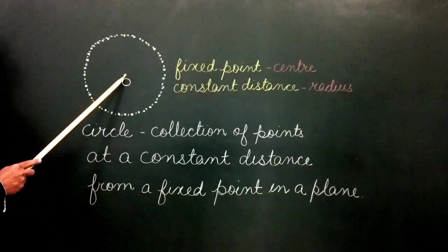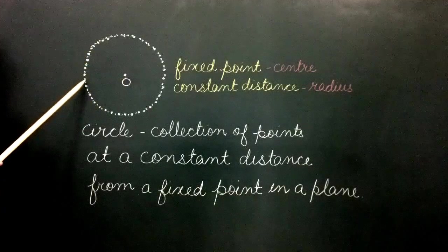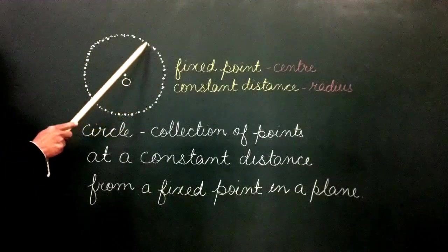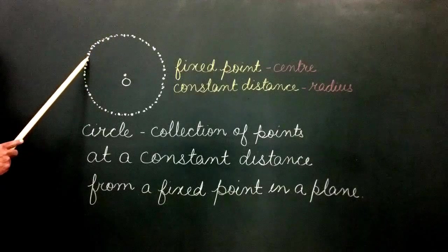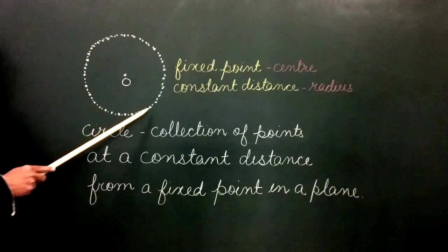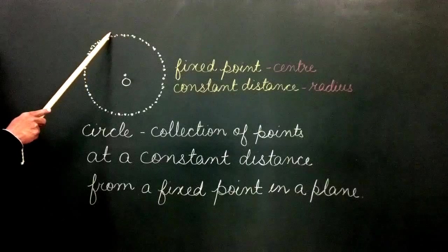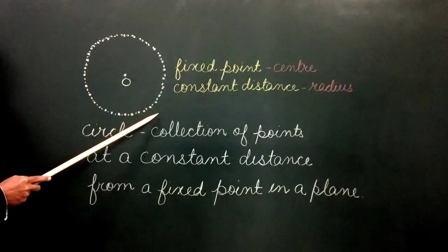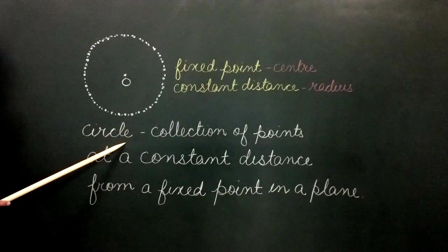Here we have a point O. All these points have been marked at a distance of 5 cm from O. As the number of points increases, we get a path in the shape of a circle.